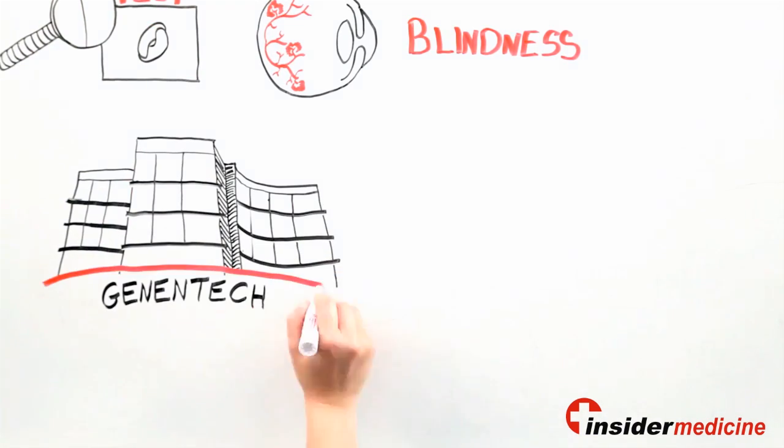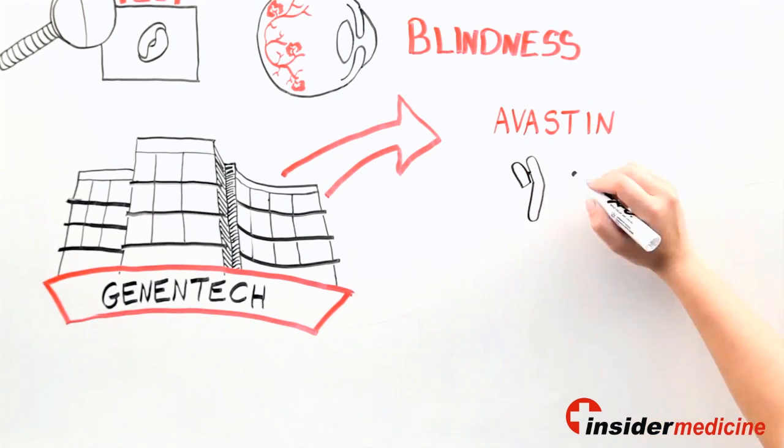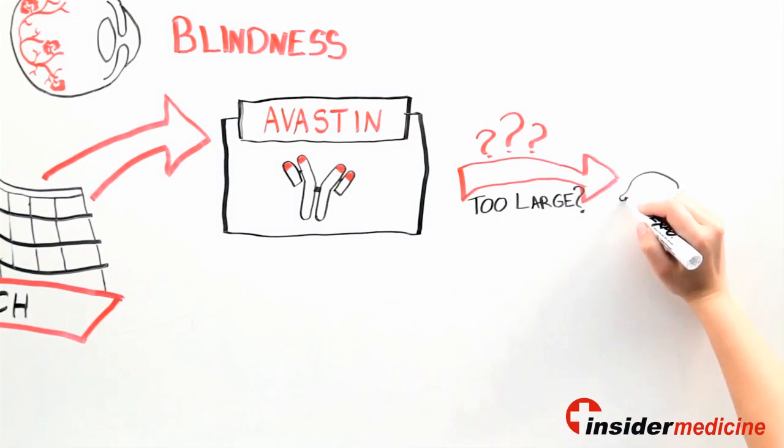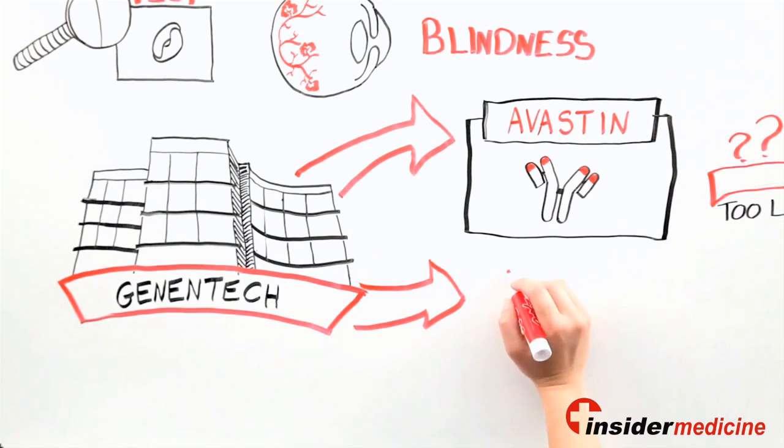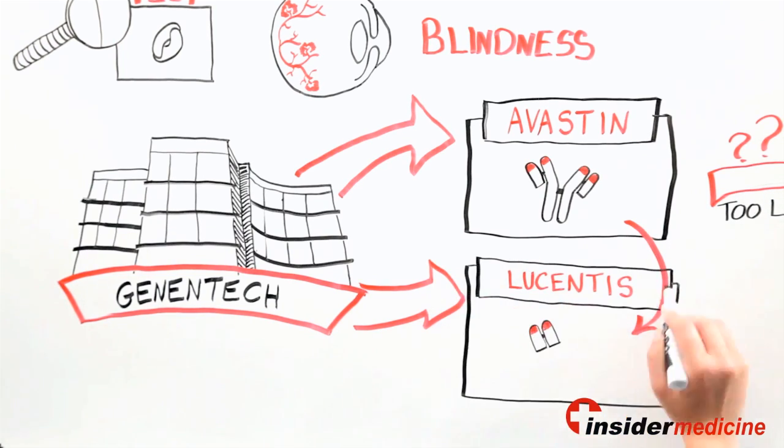Luckily, a company called Genentech already had an anti-VEGF antibody called Avastin, which had been approved to treat colorectal cancer. But scientists worried that the Avastin molecule was too large to work properly in the eye, and so Genentech designed another anti-VEGF molecule called Lucentis that was one-third of the size. They did it by splitting the Avastin molecule and getting rid of the part that attracts inflammation.